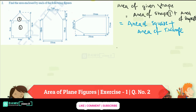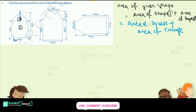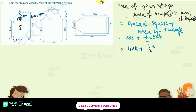For the square, the side is equal to 4 centimeters. For the triangle, the height is 6 minus 4, which equals 2 centimeters. So the triangle height is 2 centimeters, because the total given height is 6 and the square side is 4, so 6 minus 4 gives us 2 centimeters.